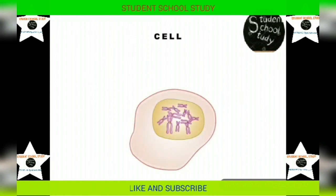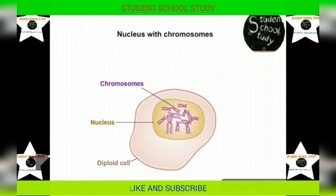If we delve into the details of inheritance, we will have to first look into what an organism consists of. All living things are made up of numerous cells. This is how a cell looks. The house of inheritance is the nucleus.